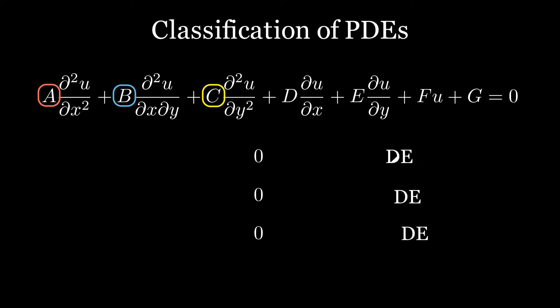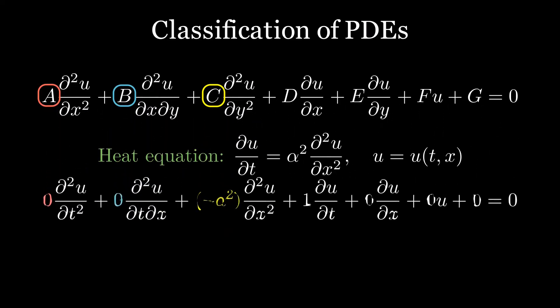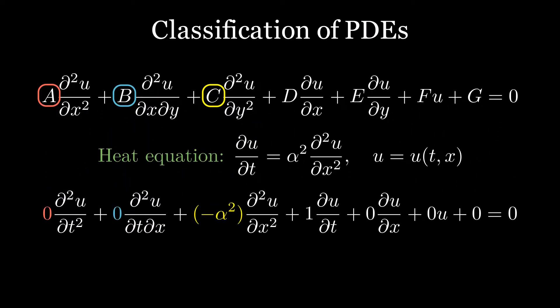We can begin with the one-dimensional heat equation, with time T and space X being the independent variables. You should notice that there will be no difference in higher dimensions where Y and Z come into play, because we still consider them all as X, the space variable. Take a look at the general form to classify this equation.